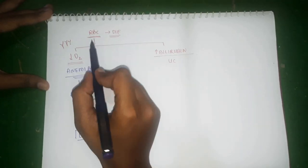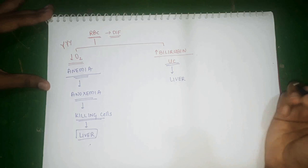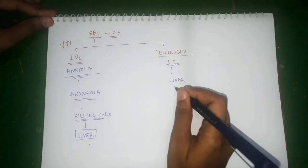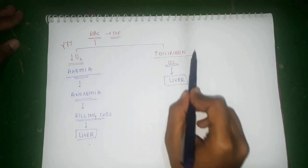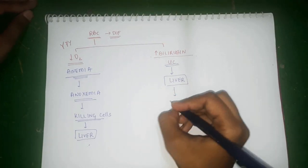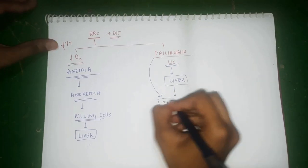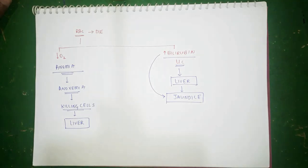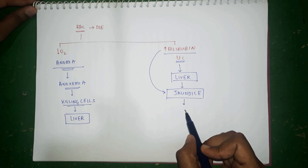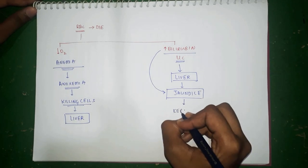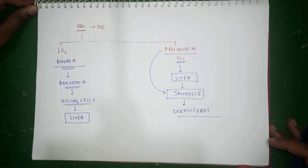The unconjugated bilirubin produced by excessive RBC destruction goes to the liver to get conjugated and excreted through the extrahepatic biliary system. However, the fetal liver is not fully developed — it is not developed enough to handle this large amount of bilirubin being produced. As a result, because of the excess bilirubin, the child will present with jaundice. This excess bilirubin can also go and affect the brain of the developing fetus, which is very dangerous to fetal development.